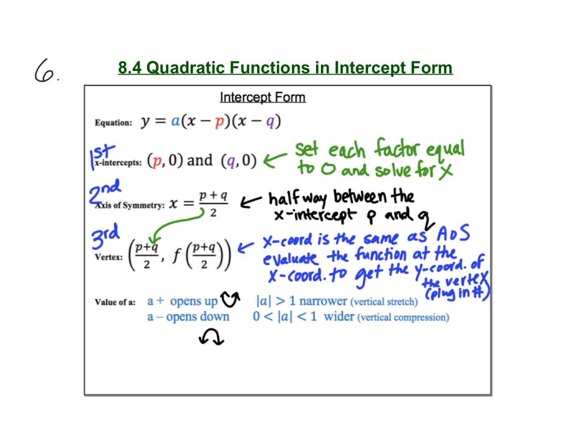Finally, the value of a for intercept form does the same thing that it always does. If a is positive, our graph opens up. If a is negative, it opens down. If the absolute value of a is greater than one, it becomes narrower. And if the absolute value of a is between zero and one, then the graph becomes wider.